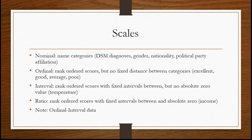Interval scales take it a step further — these are rank ordered scores with fixed intervals between them, but no absolute zero value. Temperature is the classic example. People sometimes ask whether temperature has an absolute zero, but technically and scientifically we've never been able to record absolute zero — there's no such thing as the complete absence of all temperature. That's why temperature is an example of an interval scale.